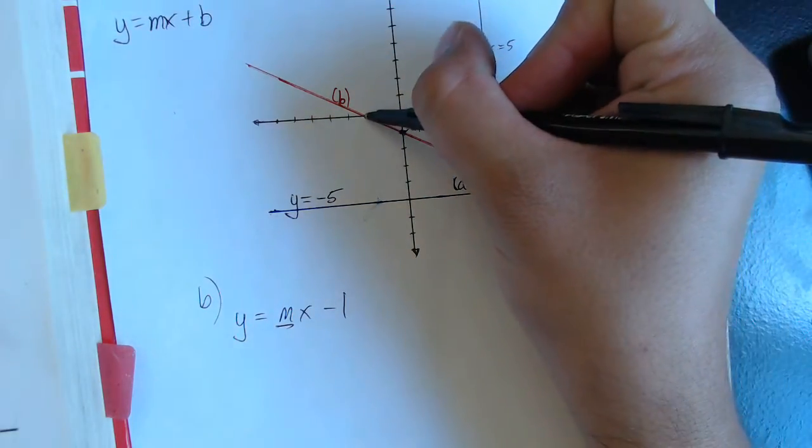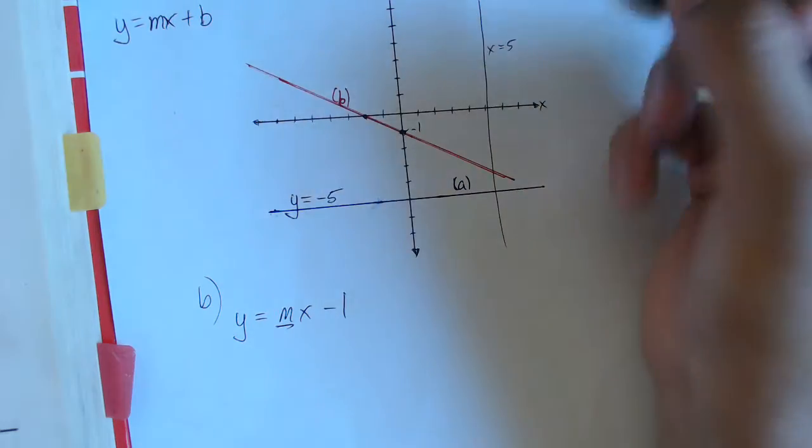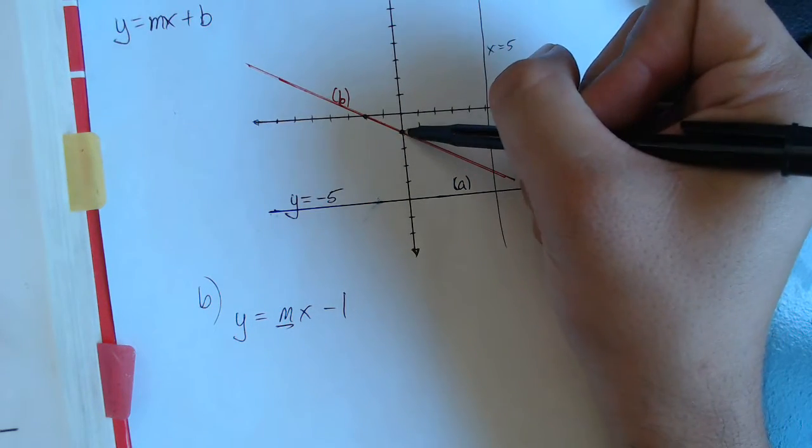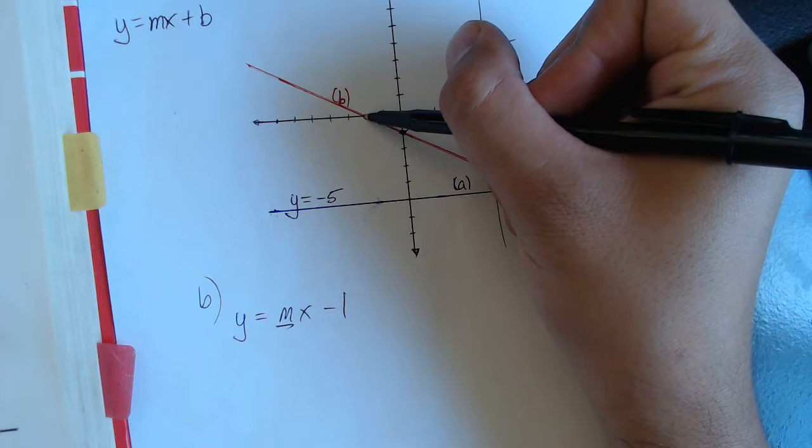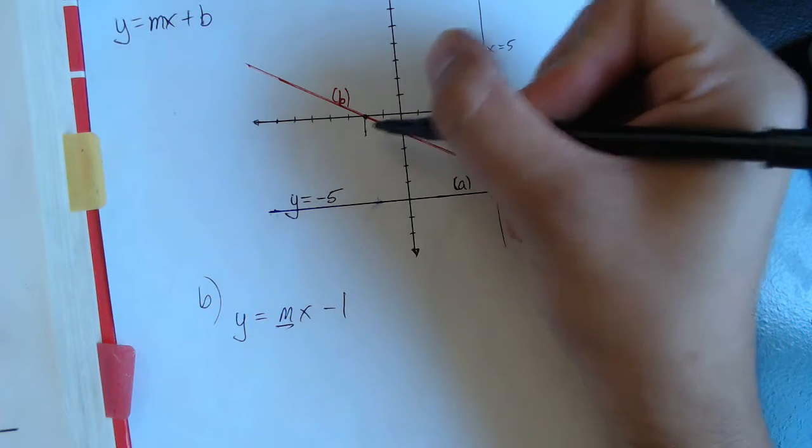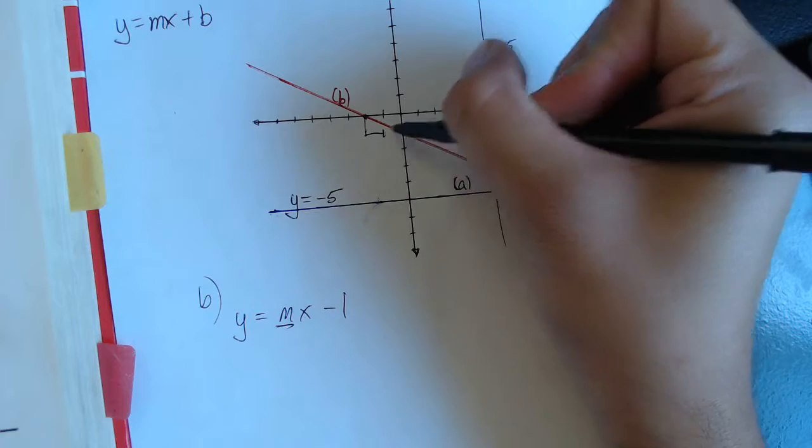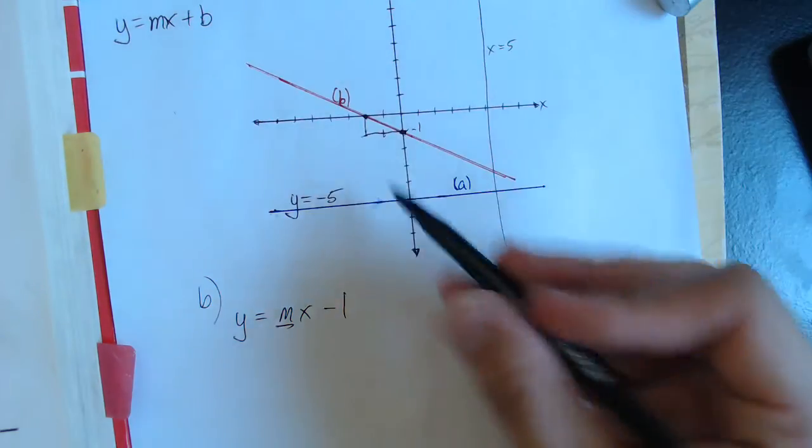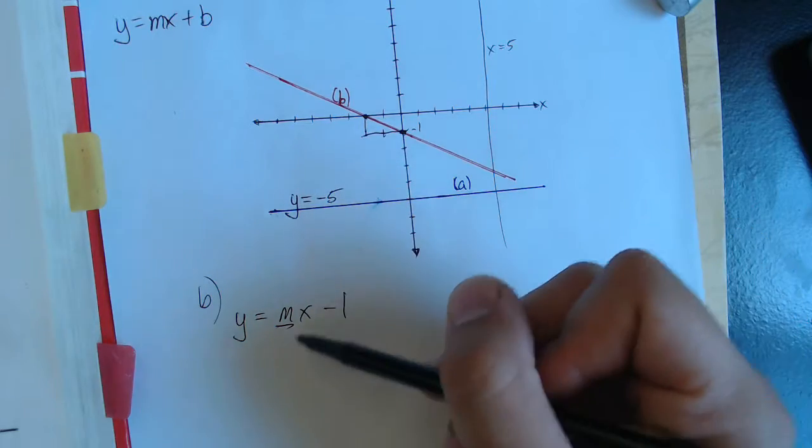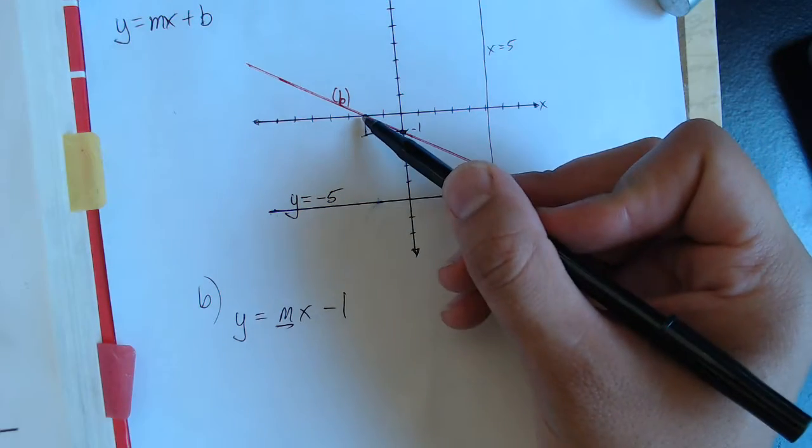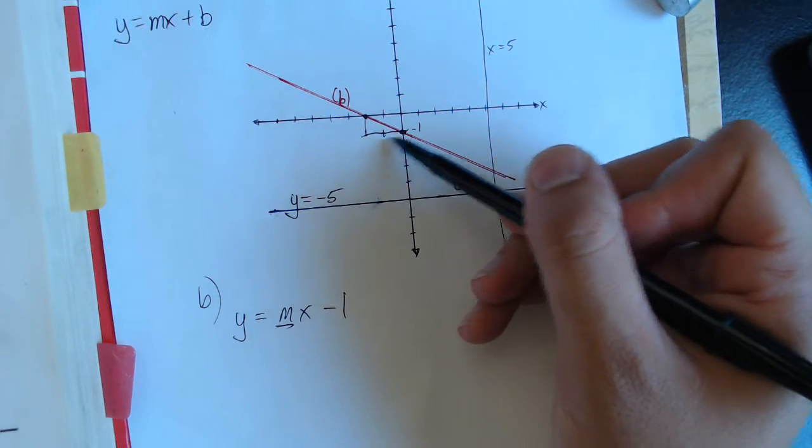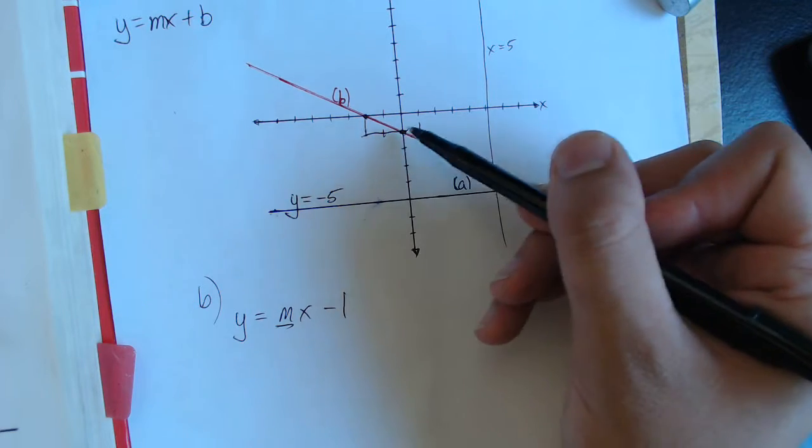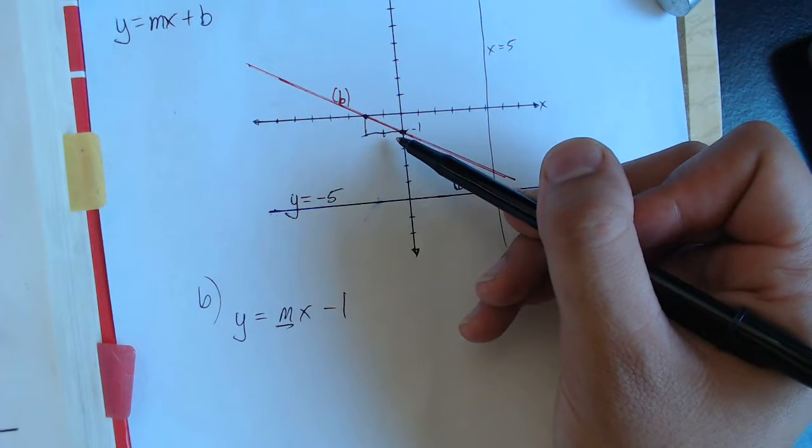But if we start at one point on the graph, like right here, and then we trace to the next point, we would drop one and go over one, two. So the rise over the run, or the slope, would be a rise of negative one over a run of positive two.